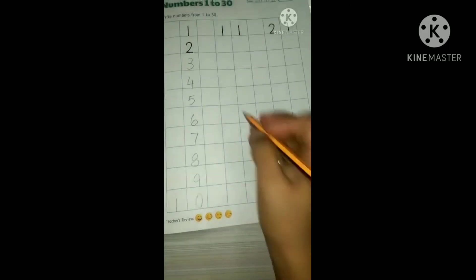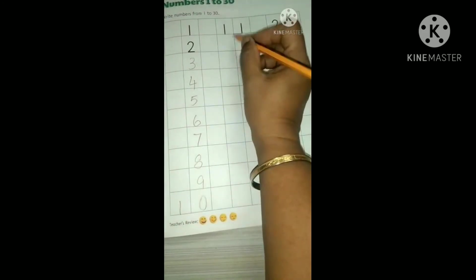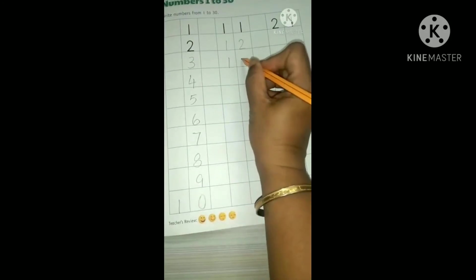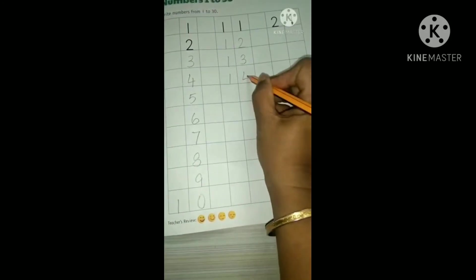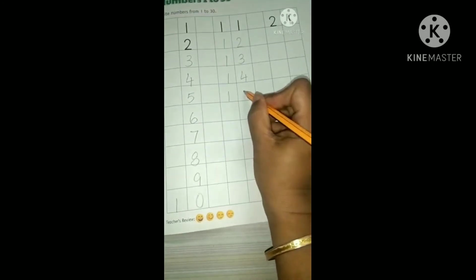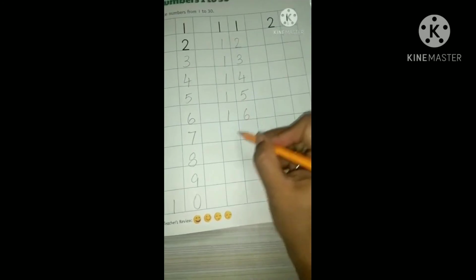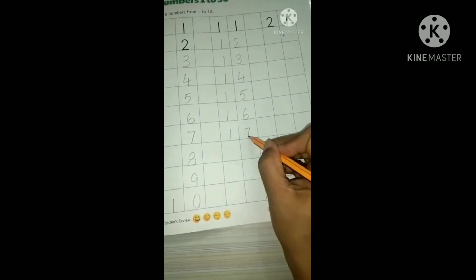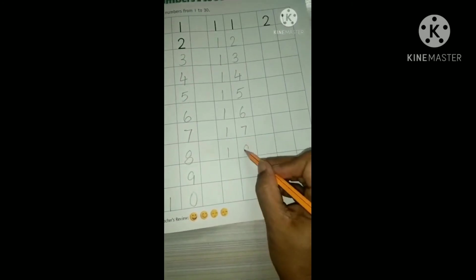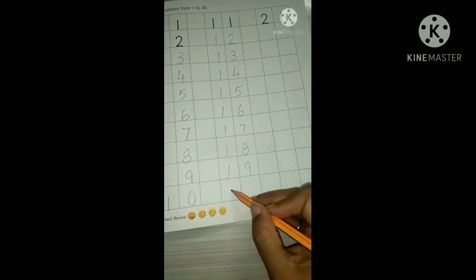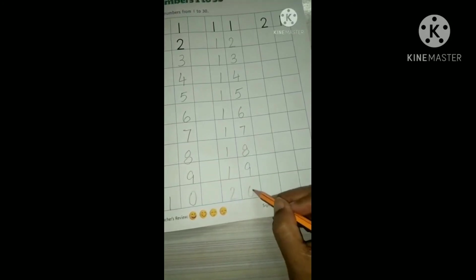1, 1, 10. 1, 1, 11. 1, 10, 2, 1, 12. 1, 10, 3, 1, 13. 1, 10, 4, 1, 14. 1, 10, 5, 1, 15. 1, 10, 6, 1, 16. 1, 10, 7, 1, 17. 1, 10, 8, 1, 18. 1, 10, 9, 1, 19. 2, 10, 0, 1, 20.